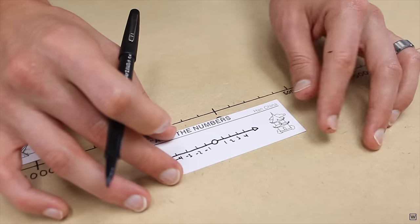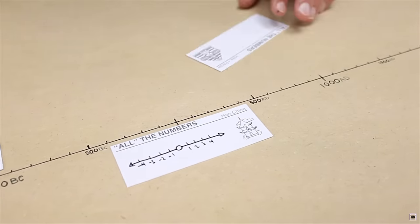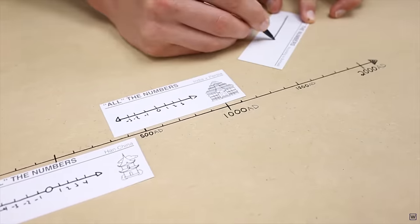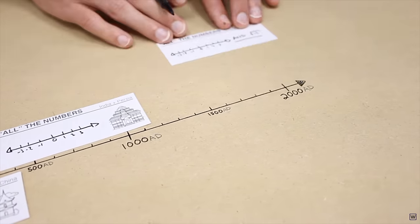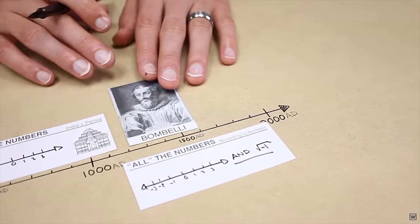Just as people needed fractions, zero, and negative numbers to solve new problems in the past, to solve this problem Bombelli now needed the square root of negative 1 to be its own brand new number.